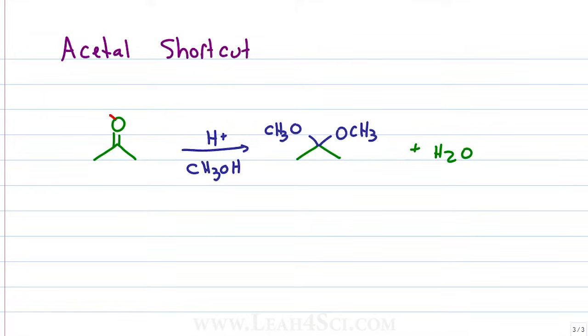If you're given a reactant and you need the product, here's what you do. You simply cut off the carbonyl oxygen because that comes off as water. You cut off the two hydrogens from alcohol because that comes off with water. And you add the OR group, whatever that oxygen is carrying to the carbon that holds the carbonyl.